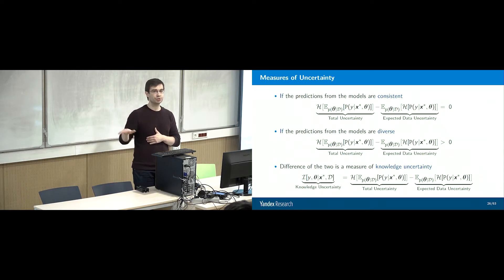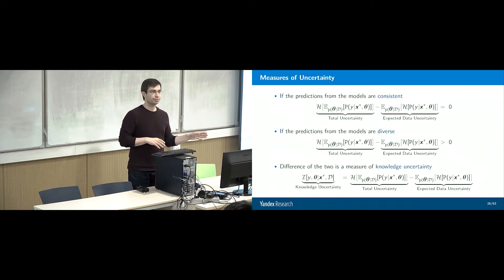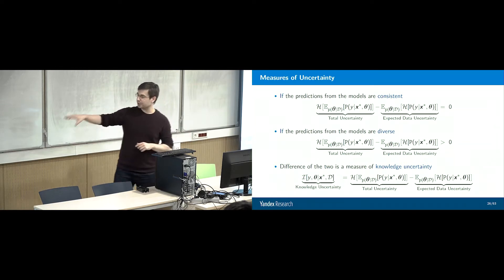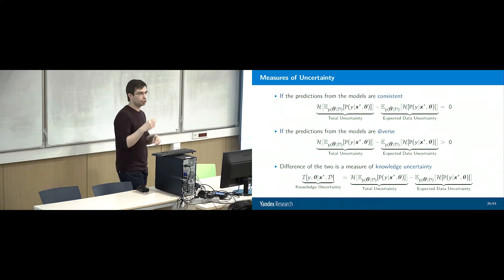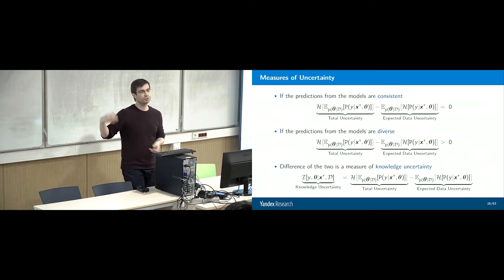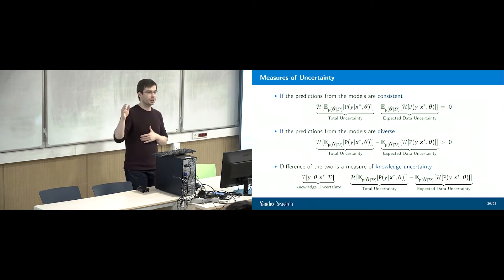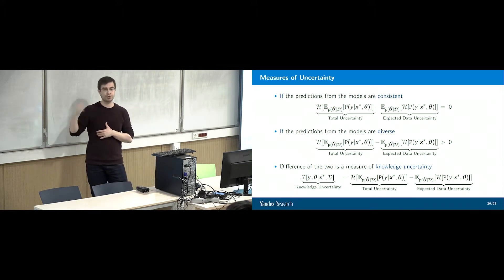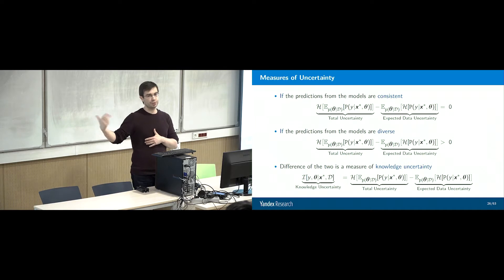This difference is called mutual information and is a measure of ensemble diversity. A different measure of ensemble diversity is pairwise KL divergence — if we take models from the ensemble and average all pairwise KL divergences, we also get a measure of ensemble diversity. There are many different ways of making ensembles, but empirically the best way is deep ensembles.